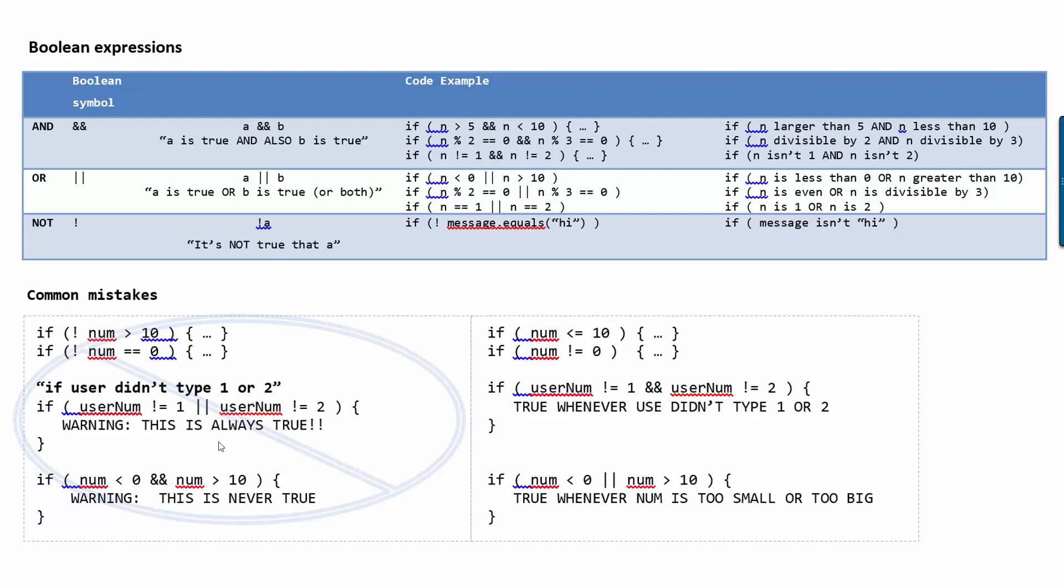So a different way of putting this is, it's always true that the user num isn't 1 or the user num isn't 2. Because if it's not 1, it might be 2. And if it's not 2, it might be 1. Or if it's neither of those, it might be something else.